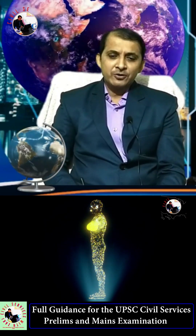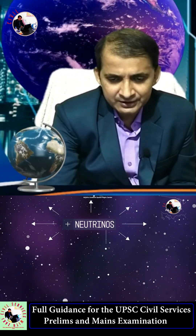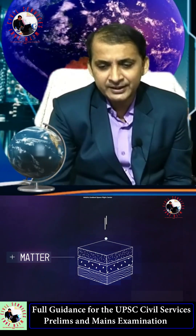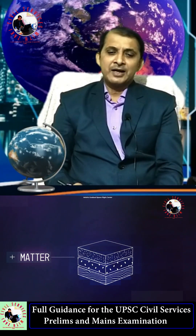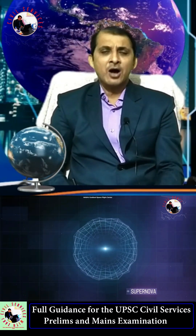Trillions of neutrinos strike your body every second, which is why neutrinos are called the most abundant particles in our universe. For the first decade, scientists assumed neutrinos were massless, but research has now confirmed they do have some mass — though exactly how much remains a puzzle.